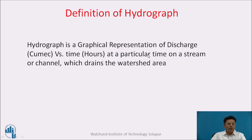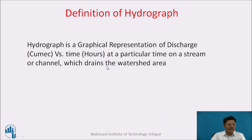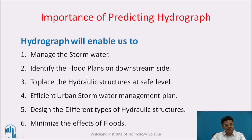The definition of a hydrograph: a hydrograph is a graphical representation of discharge in cubic meters per second versus time in hours or days, at a particular section on a stream or channel which drains the watershed area.